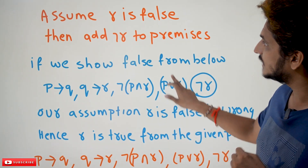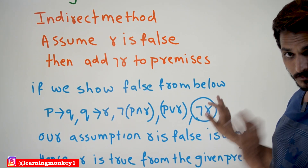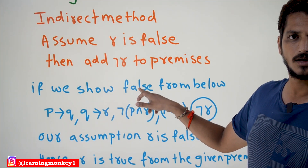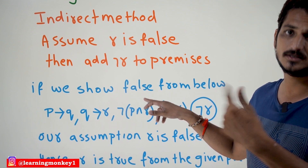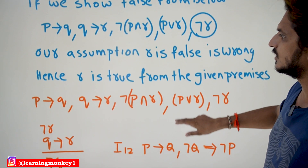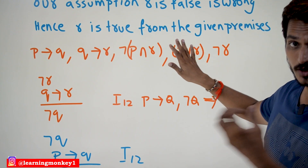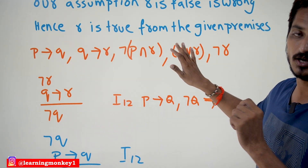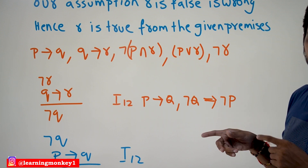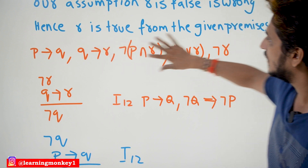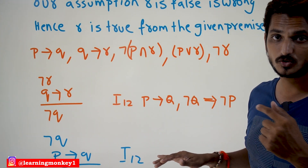Understand it properly. Our assumption: we assumed that R is false, so negation R means true. This is added to our premises. From these premises, if you show false — we need to derive R from the set of premises. Indirect method: our assumption R is false, negation R means true, add this to our premises. So the set of premises which we got using indirect method are these. From these premises, we need to show false.